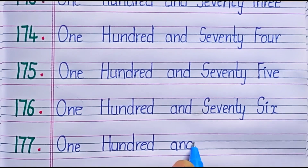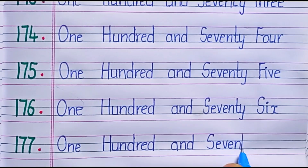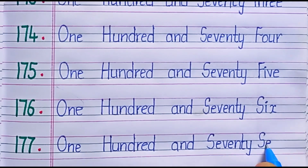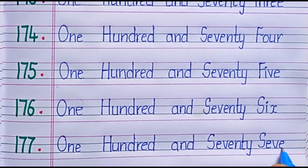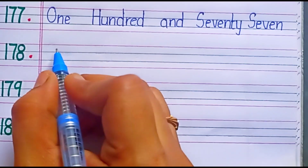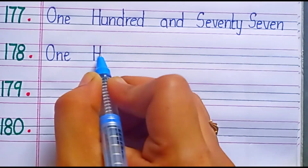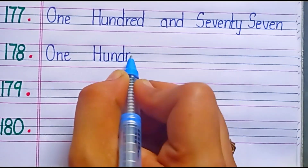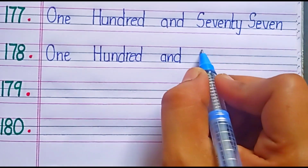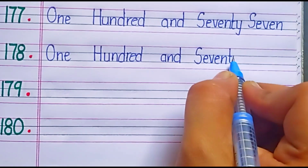One hundred and seventy seven. One hundred and seventy seven: S-E-V-E-N-T-Y, 70, S-E-V-E-N, 7.